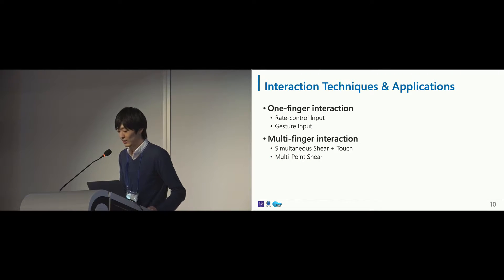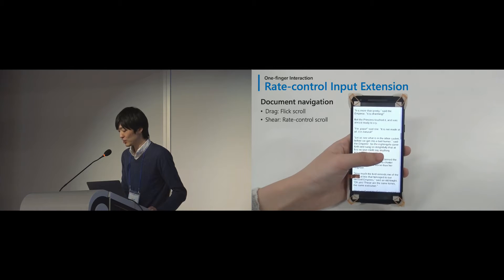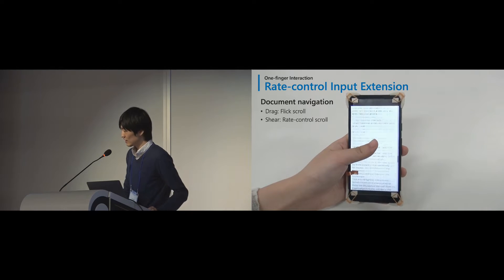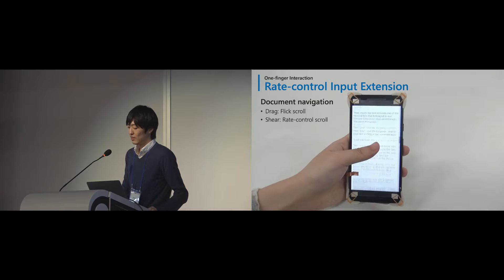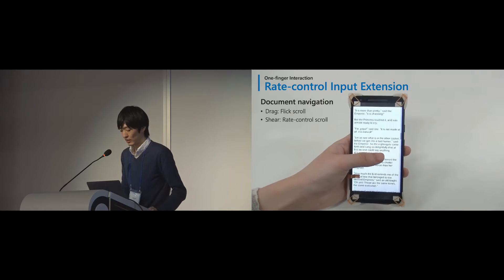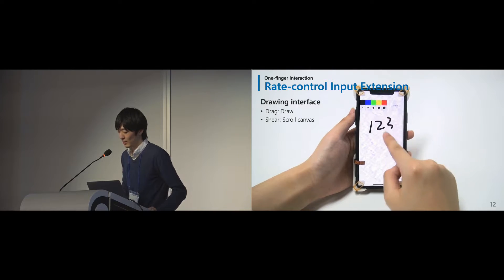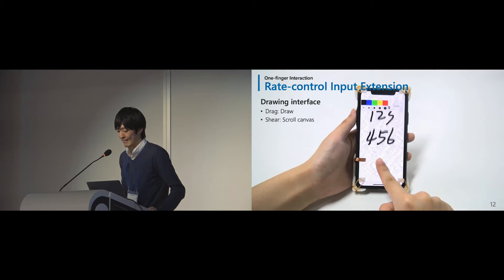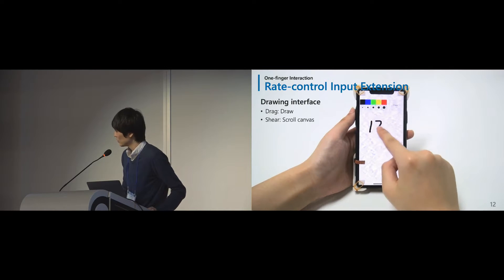Let me introduce the interaction techniques and application examples achieved by Shear Seat. Since the Shear Seat behavior is similar to a joystick, we believe the most promising usage is mapping to rate-based control input. One example is the scrolling interface — our interface extends continuous rate control scrolling on existing flick-based interfaces. A similar idea can also be applied to drawing on a canvas, where both drawing and scrolling can be performed without mode switching.